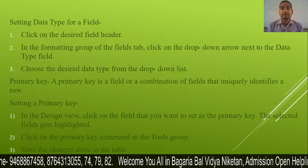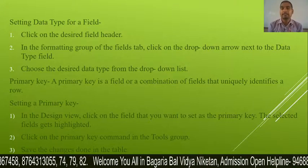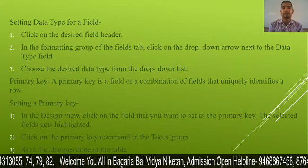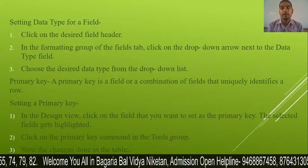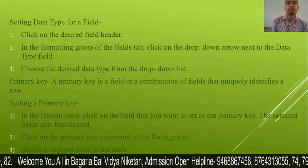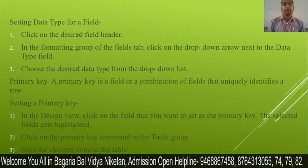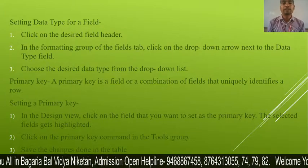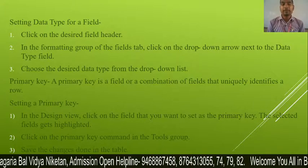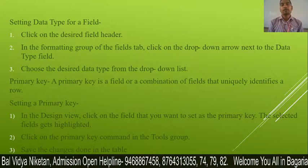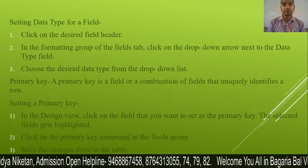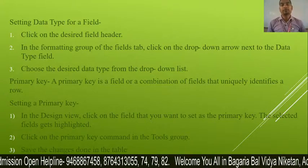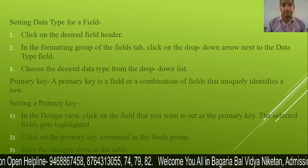Next is how to set the primary key. In Design View, click on the field that you want to set as the primary key. The selected field gets highlighted. Then click on the Primary Key command in the Tools group and save the change. Let's see the practical steps.